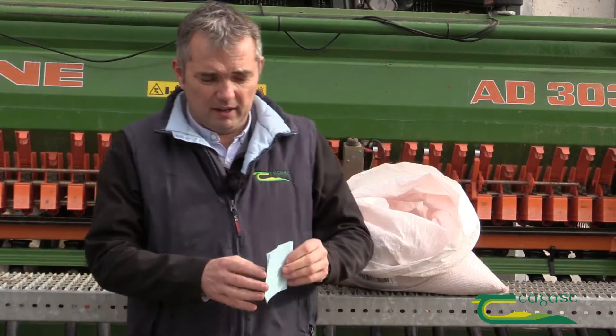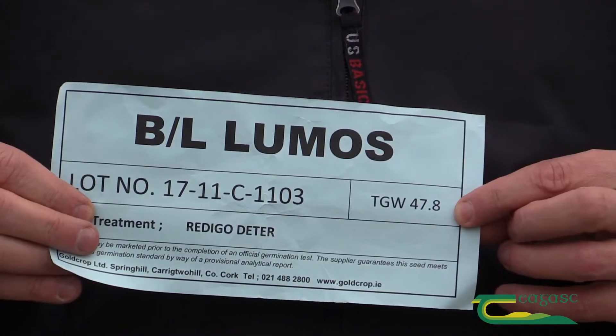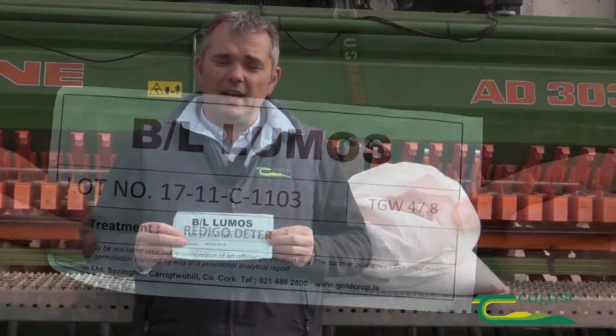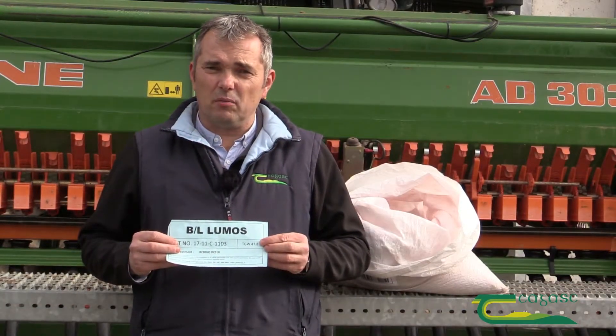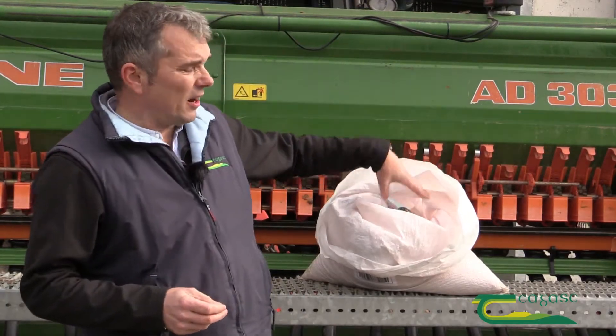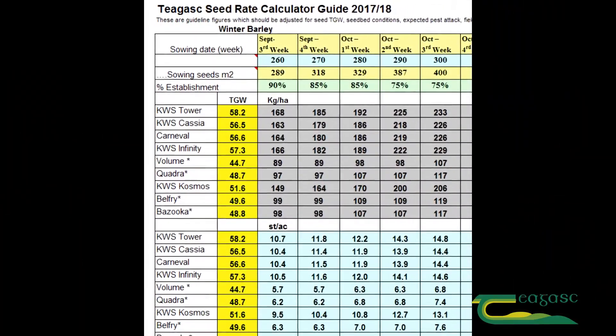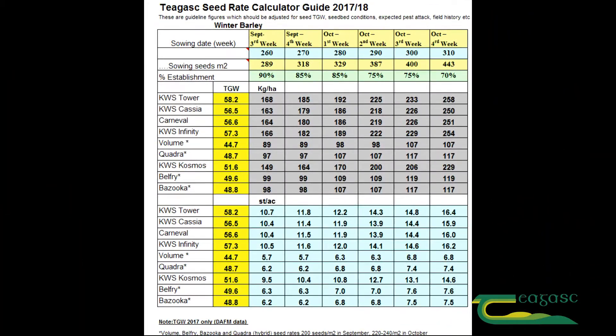So where do we get this thousand grain weight? Well, it should come on the label with the seed that you get, and it should be printed on that label. If you don't have it on the label, you should be able to get that thousand grain weight from your supplier. If you can't get it from there, you can physically count out a thousand grains and weigh them yourself, or Chagas publish a seed rate calculator every year, and we use figures on that calculator that we get from the Department of Agriculture annual seed thousand grain weights.